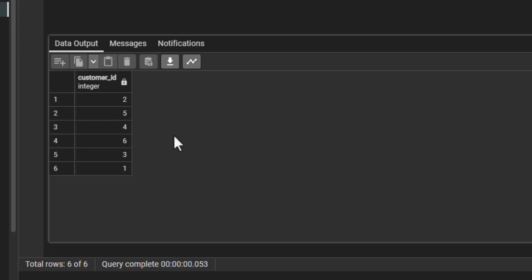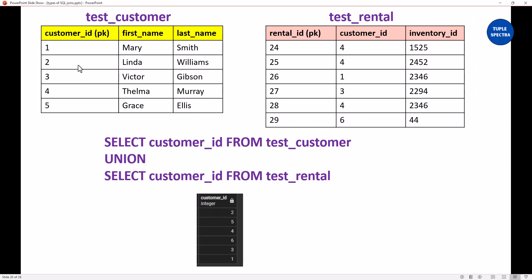If I go back to the PowerPoint, you can see that customer_id 1 is here and it is also here. We would expect to see two 1s in the resulting table, but because it is union it removes one of them — you only see one 1. Looking at where we have 4, we have customer_id 4 one time in the customer table and customer_id 4 three times in the rental table — you would expect to see it four times, but union has removed the duplicates.